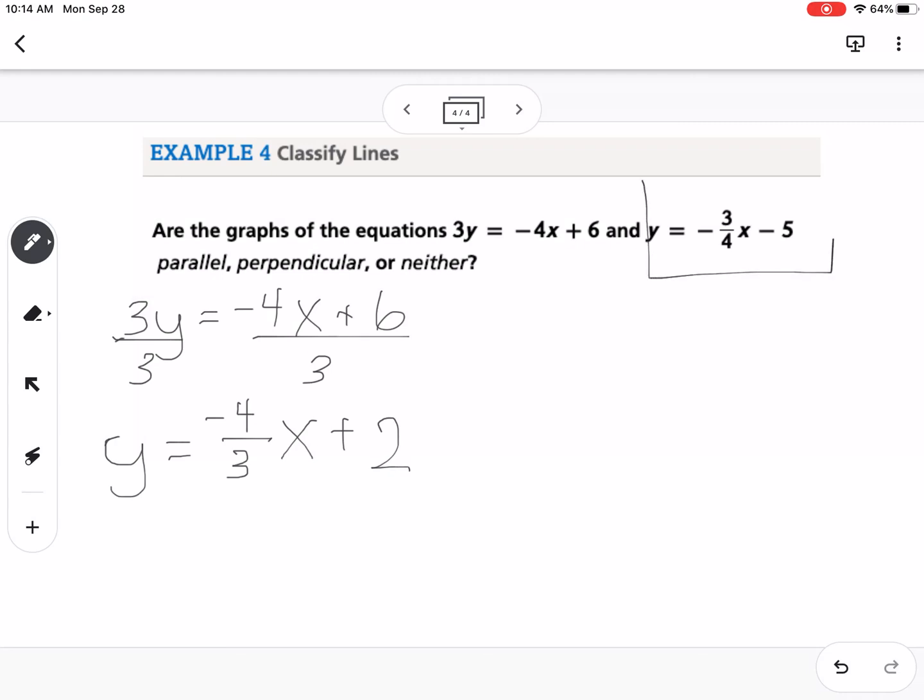So we have—if we go back up to our original problem—we have y equals negative 3/4 x minus 5, and we have y equals negative 4/3 x plus 2. So our slopes are negative 3/4 and negative 4/3. These are reciprocals, but they're not opposites. So if they were parallel, they'd need to be the same. If they're perpendicular, they need to both be opposite reciprocals.